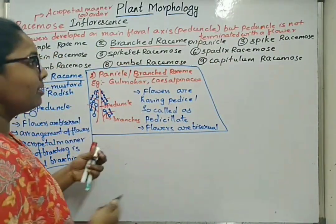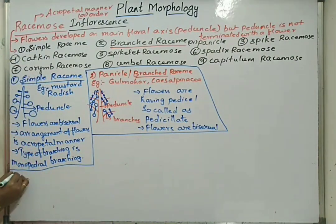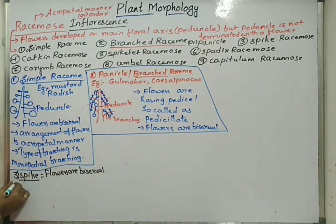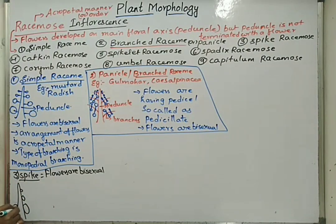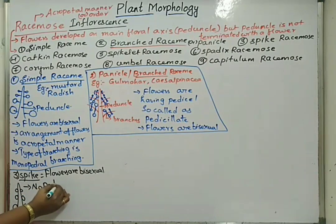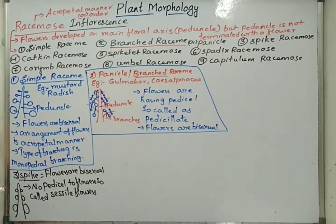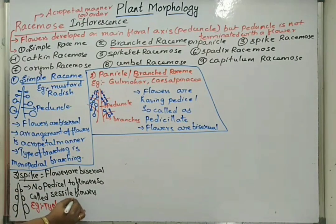The third type is spike type of racimose inflorescence. Flowers are bisexual, but flowers do not have a stalk to hold. Flowers are directly attached — there is no pedicel seen. Such types of flowers are called sessile flowers. This spike inflorescence is seen in case of Typha, Amaranthus, and Achyranthes. Examples are very important in all types of inflorescence.